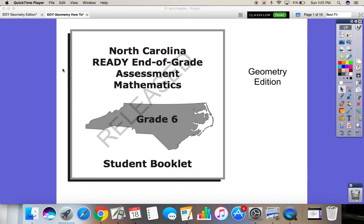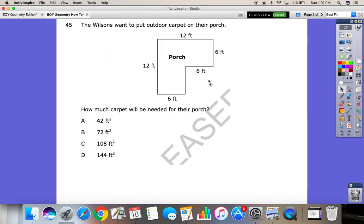Today we are going to continue with the North Carolina Ready End of Grade Assessment Mathematics for 6th grade, and this time we're going to focus on some of the geometry questions. The first one we're going to start off with is this one here. You always want to read the question and see what the purpose is. The Wilsons want to put outdoor carpet on their porch. How much carpet will be needed for their porch?